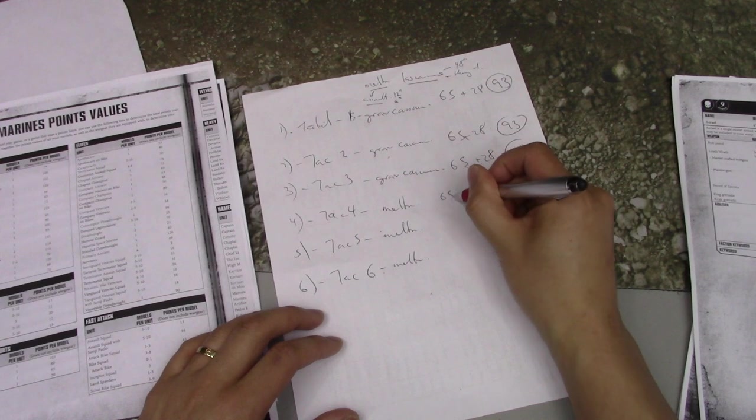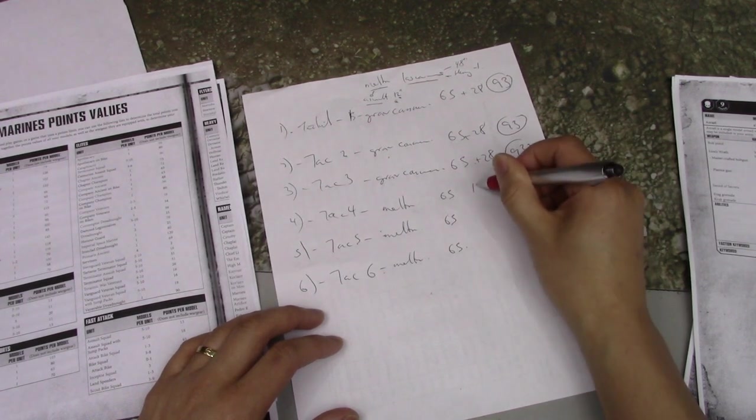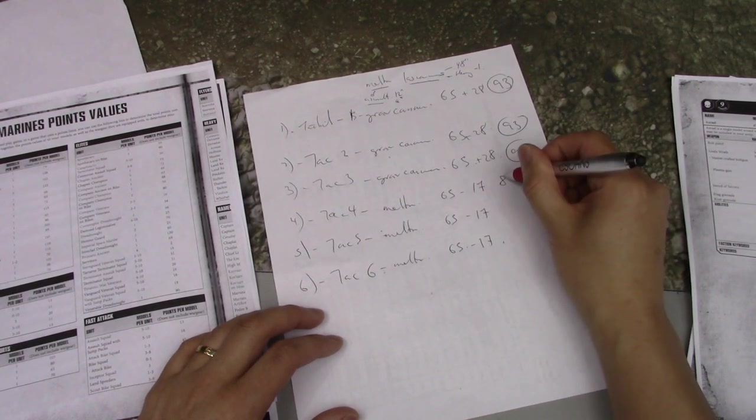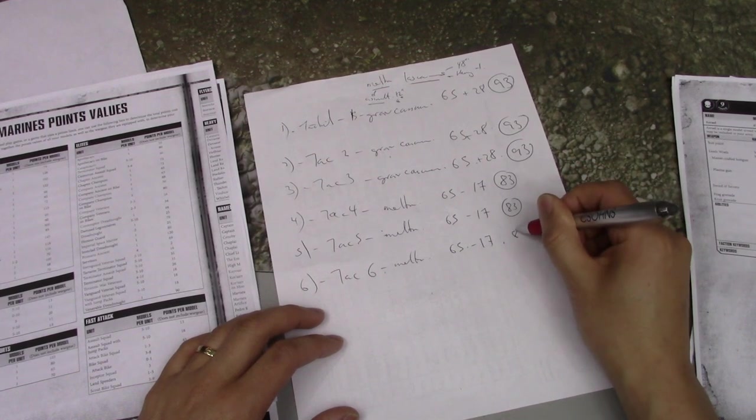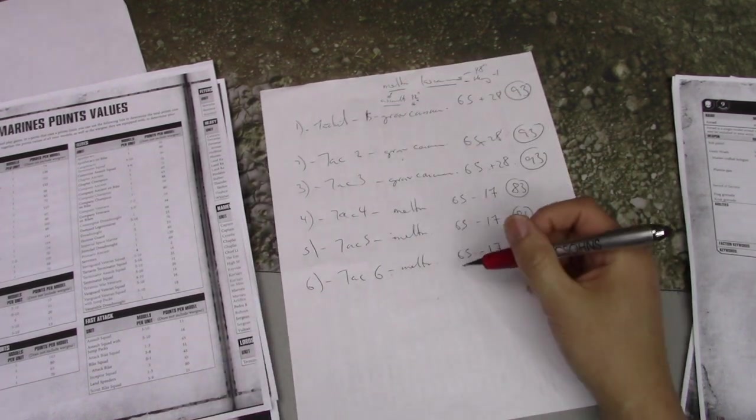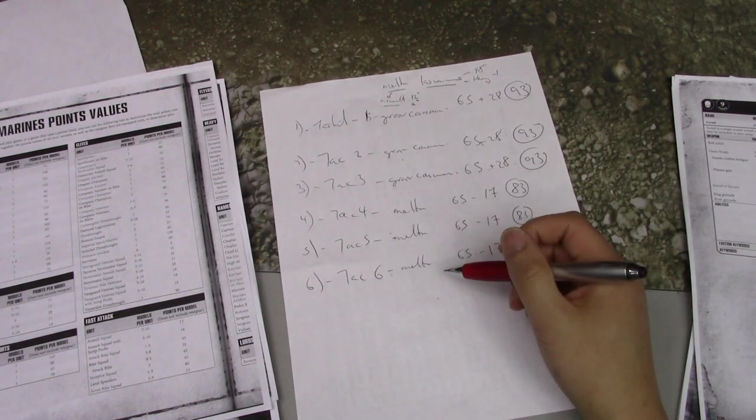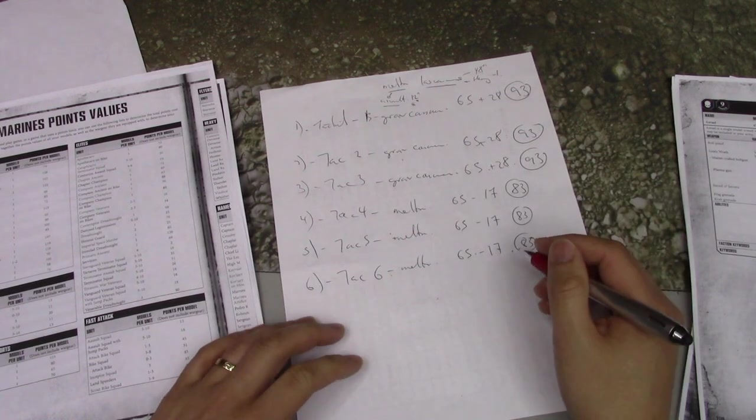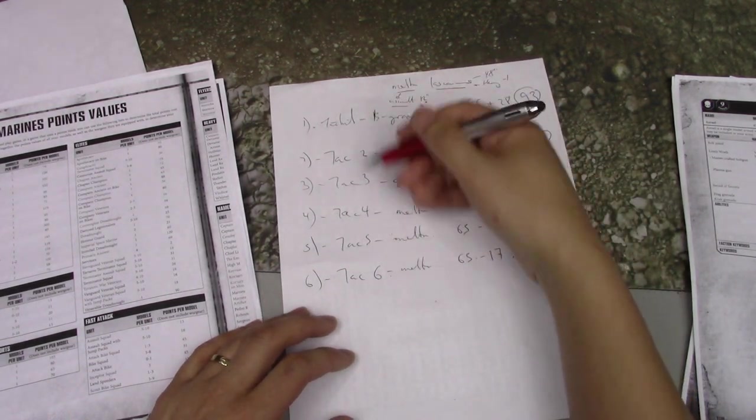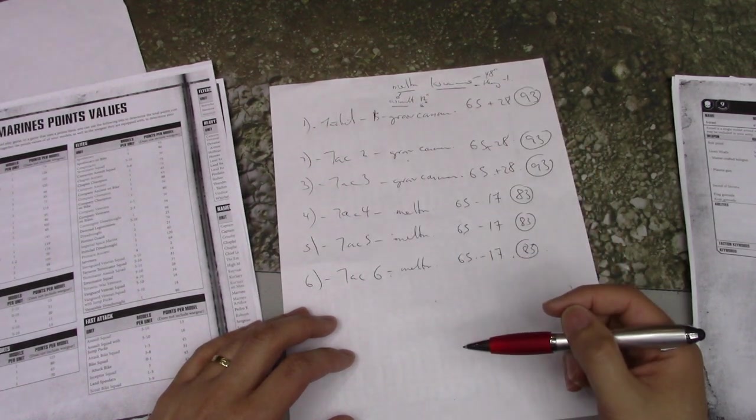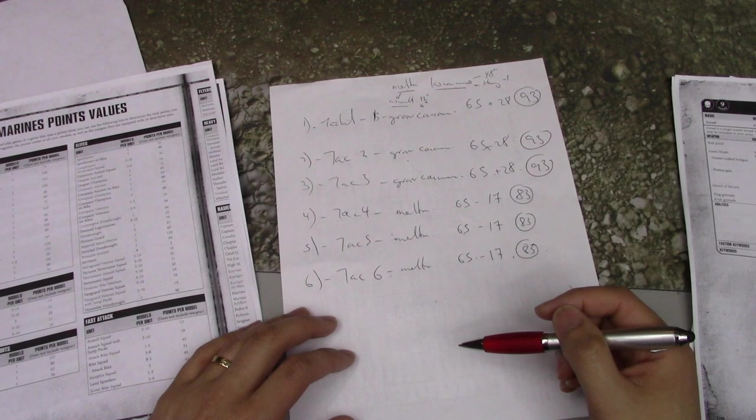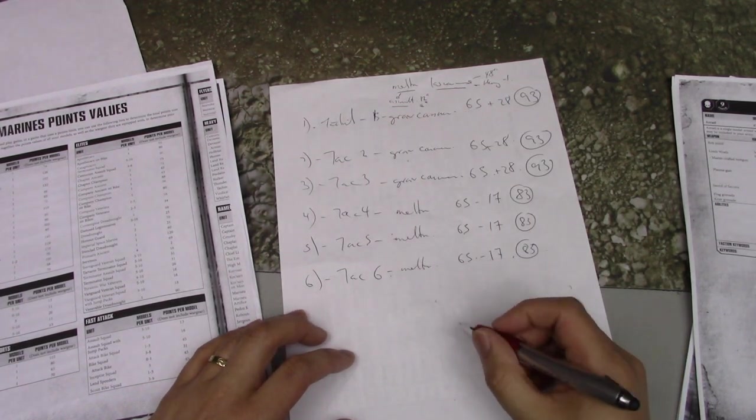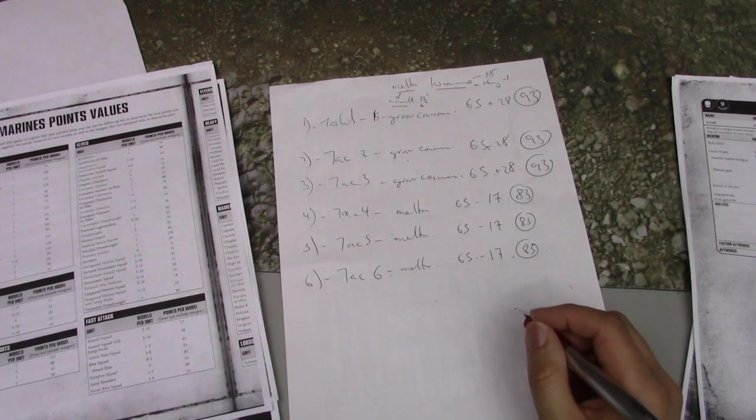So they're shooting minus one. But on an assault, if you advance and shoot to get further in range, that's also minus one. So those two kind of cancel each other out. Really it's about do you want short range or long range. So what I decided to do is a mixture of both. I gave Melta guns to these three squads and they can drive up and pop out and Melta things. So again, we have 65 points for the Marines. Melta guns are 17 points, so these squads are 83 points, 10 points cheaper than the grav cannons.